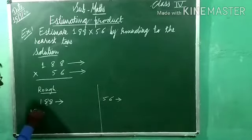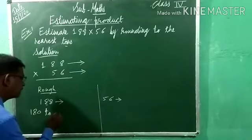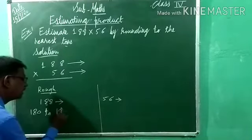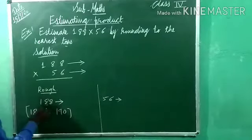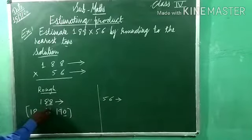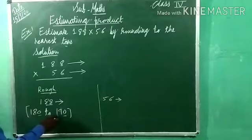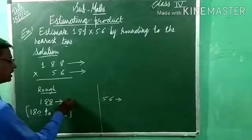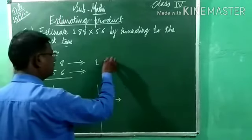So 180, now in this 180 which number do we add? Rounding to the nearest 10s, so add 10. So 180 plus 10 equals 190. Now look — 88 gets nearer to 80 or 90? This 88 gets nearer to 90 only. That means 188 gets nearer to 190. So write 190 here. We can write: 188 gets nearer to 190.